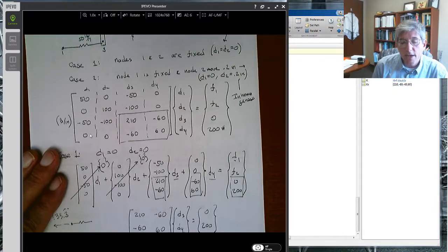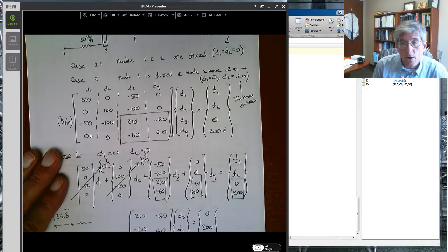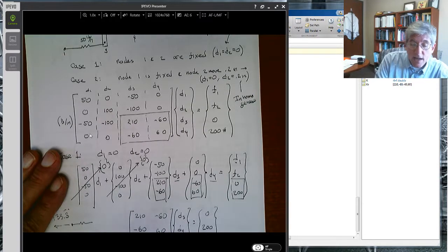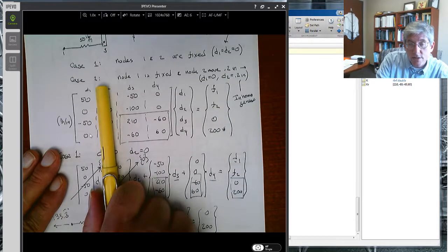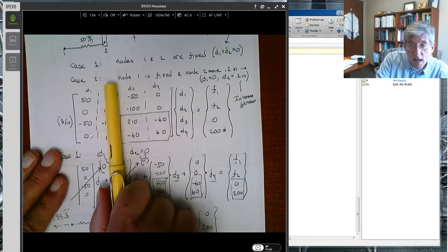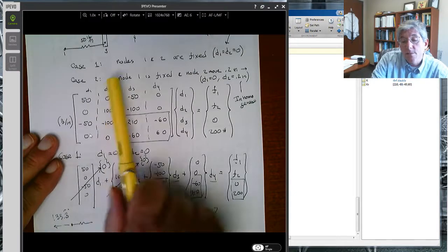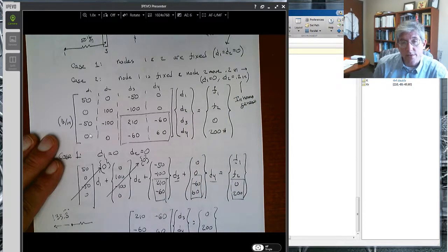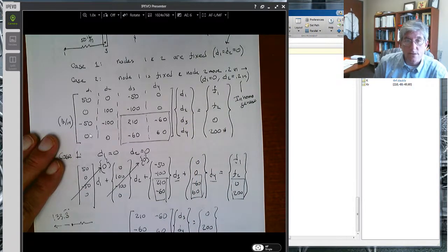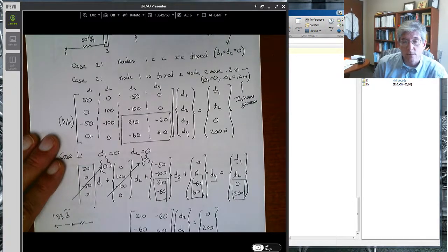Now if you have a case where you have a prescribed displacement but it is not zero, you have to take the column vector associated with that inhomogeneous displacement, take that column vector, multiply it by the value, the displacement, and then subtract that from the right-hand side. At that point, then you can go through all the same steps, solve the same reduced system, take the solution, put it back, multiply it by the original stiffness matrix, and obtain the reaction forces.